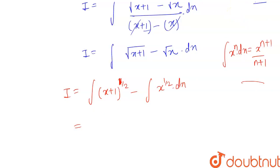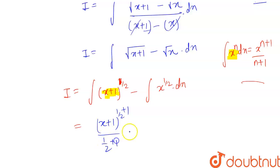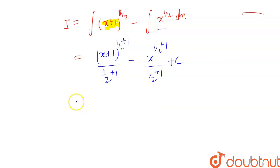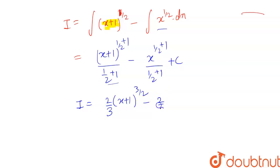Since (x + 1) and x are both linear functions, we can apply the same power rule formula. Applying it, we get: (x+1)^(1/2 + 1) / (1/2 + 1) minus x^(1/2 + 1) / (1/2 + 1) + c. This simplifies to (2/3)(x+1)^(3/2) minus (2/3)x^(3/2) plus c. This is the answer for the second integral.